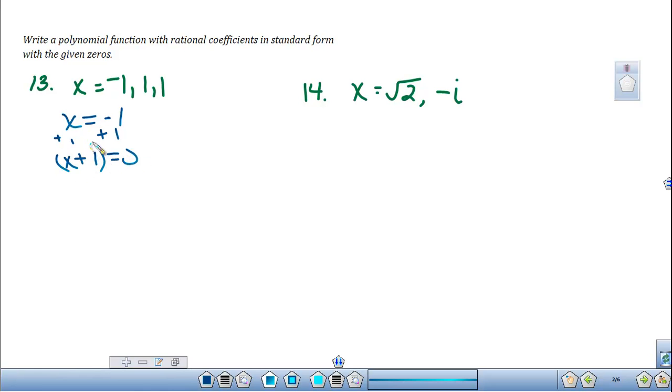That clearly shows that that is a zero of the function. And we could do the same thing with x equals 1 and subtract 1 from both sides to get it back into factored form. So our three factors are going to be x plus 1 and x minus 1 quantity squared.